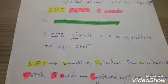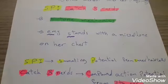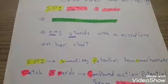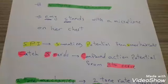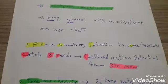SPI: Summating potential comes from the inner hair cells. Catch 8 nerds: The compound action potential comes from the eighth nerve.